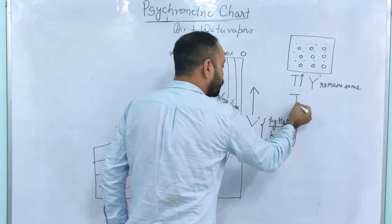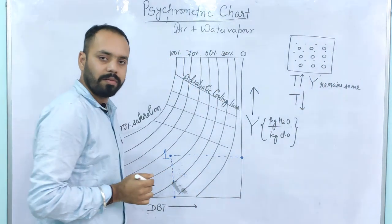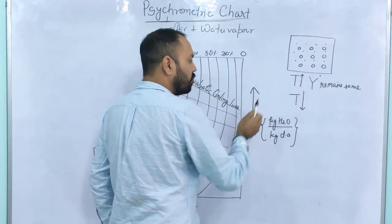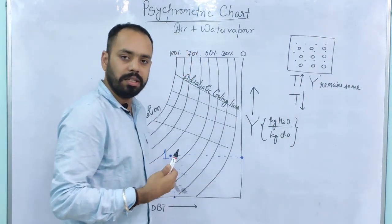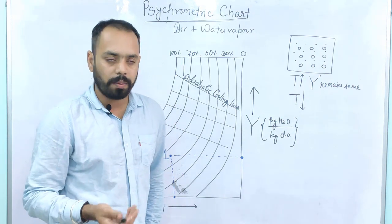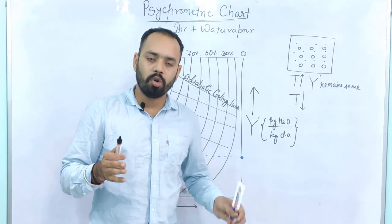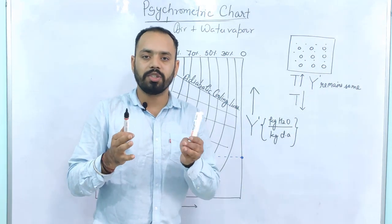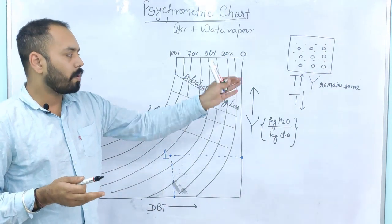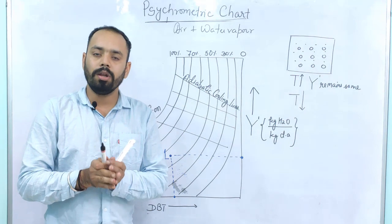What happens to the absolute humidity as temperature decreases? Increasing temperature is called sensible heating and decreasing temperature is called sensible cooling. When temperature decreases, again no mass is changing — air mass remains the same, water vapor mass remains the same — so absolute humidity again remains constant.